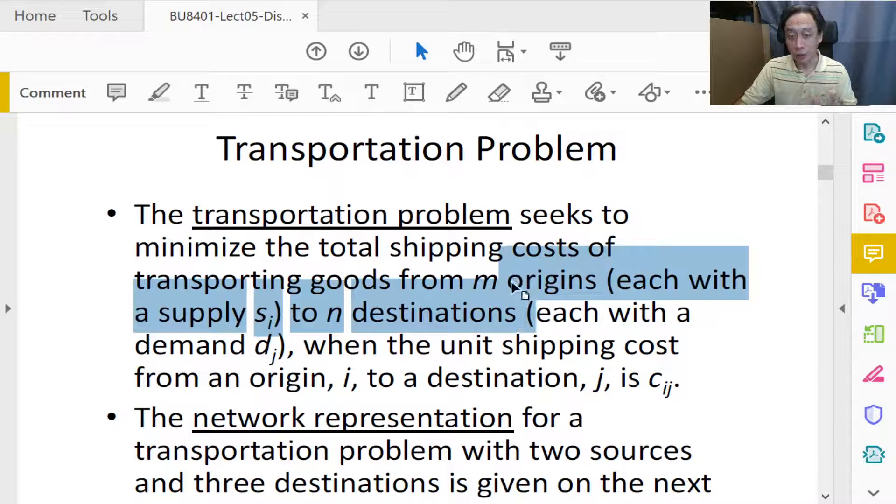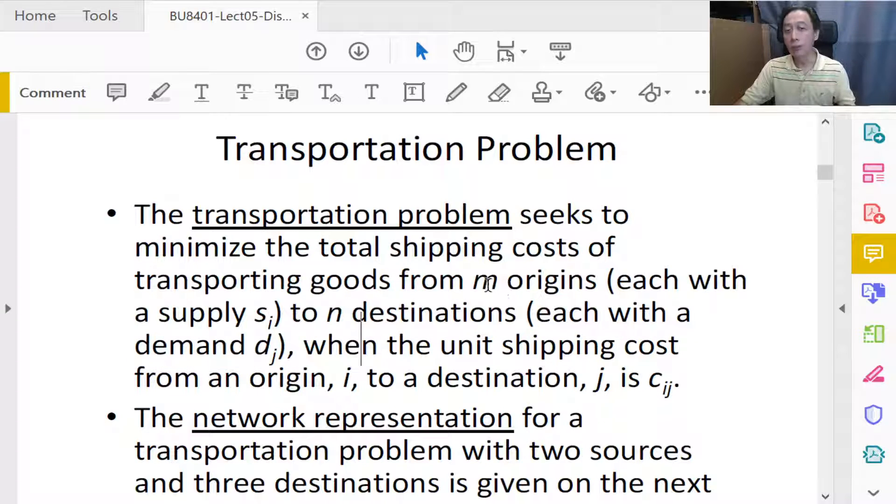So M factories, for example, N warehouses, or it could be M warehouses and N retail shops, or it could be M retail shops and N customers at their homes. All the more so with COVID-19 and stay home safe distancing measures these days, we have a lot more of these logistics transportation problems. M origins and destinations, and one of the characteristics is that we only have one kind of goods to be transported from source to destination—only one kind.